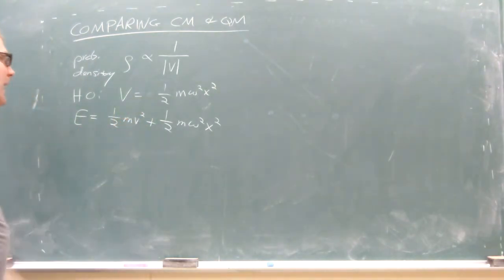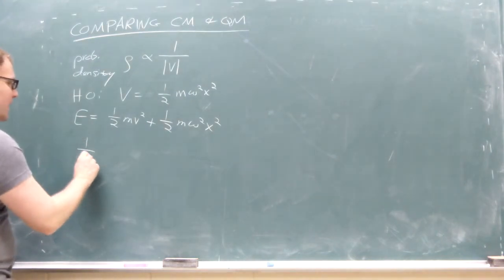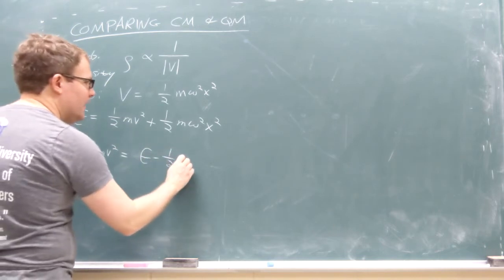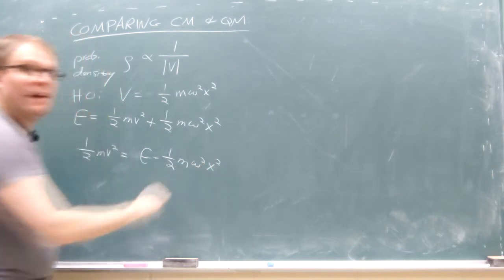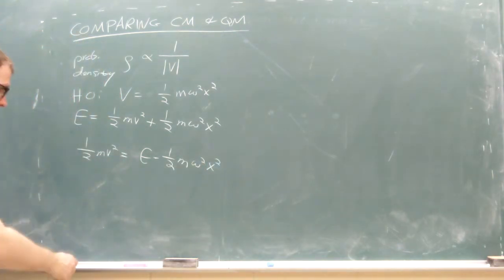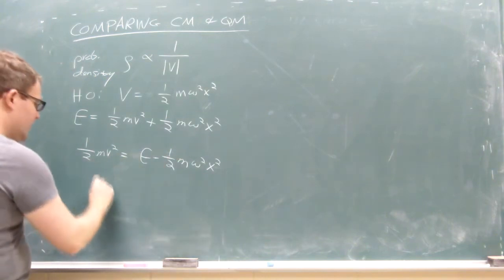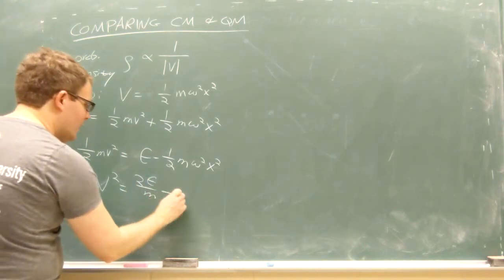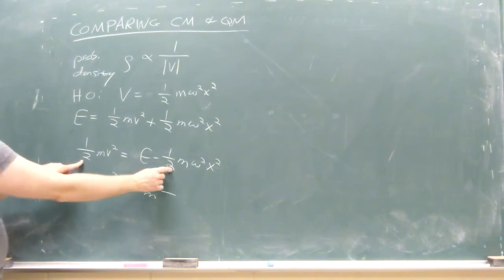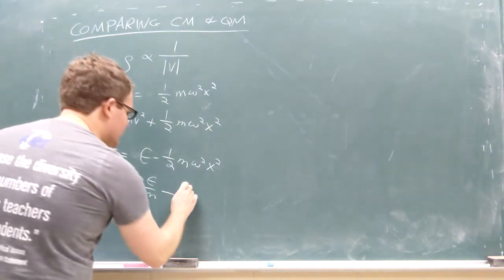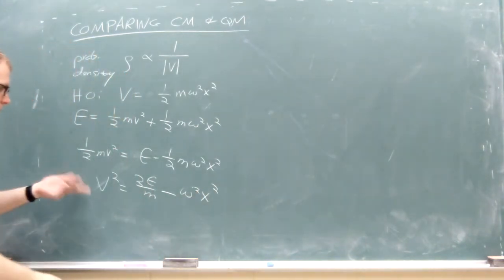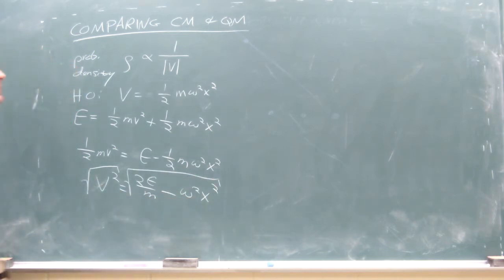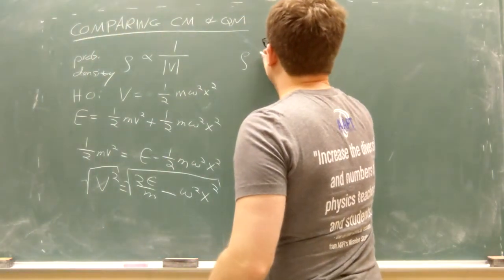Solving for velocity: the kinetic energy ½mv² equals the total energy E minus the potential energy ½mω²x². Moving the factors over, we get v² = 2E/m − ω²x², because the halves cancel and the m's cancel. Taking the square root gives us the magnitude of the velocity.